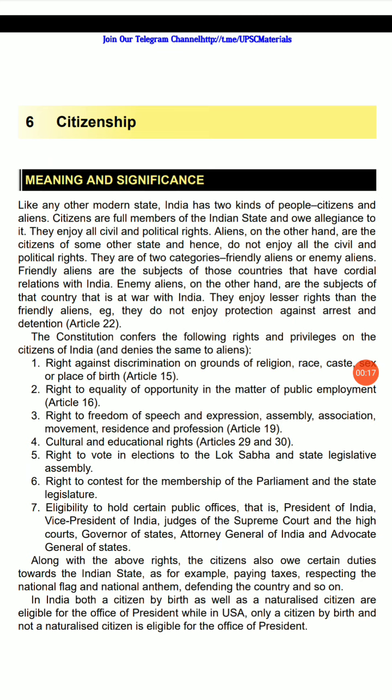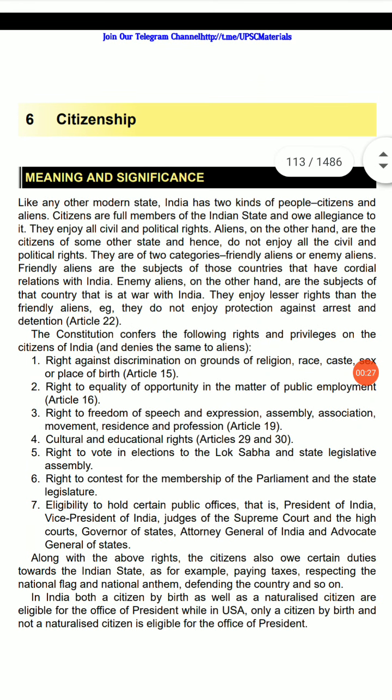Like any other modern state, India has two kinds of people: citizens and aliens. Citizens are full members of the Indian state and owe allegiance to it; they enjoy all civil and political rights. Aliens, on the other hand, are citizens of some other state and hence do not enjoy all civil and political rights. There are two categories: friendly aliens and enemy aliens. Friendly aliens are the subjects of those countries that have cordial relationships with India.